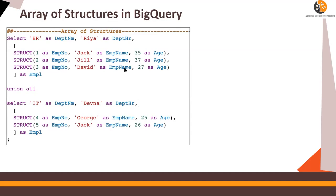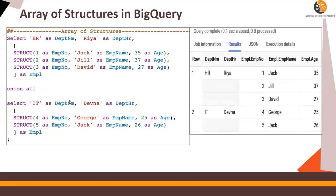Structure one, structure two, and structure three as EMPL, union with another for HR. This is for HR, this is IT, this is department HR, and this is department HR for IT. You have two structures, and running this would give you the result.